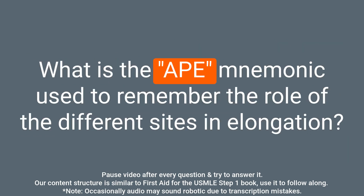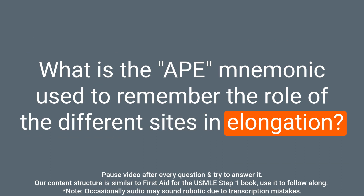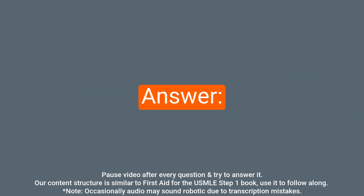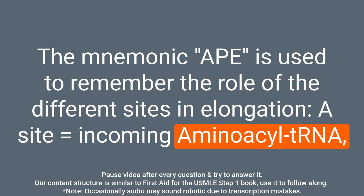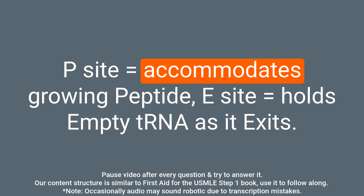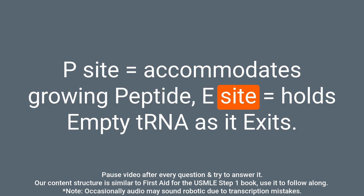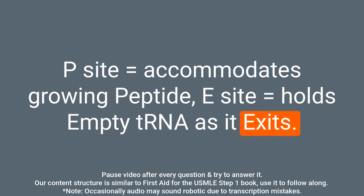Question: What is the APE mnemonic used to remember the role of the different sites in elongation? Answer: The mnemonic APE is used to remember the role of the different sites in elongation. A site equals incoming aminoacyl-tRNA; P site equals accommodates growing peptide; E site equals holds empty tRNA as it exits.